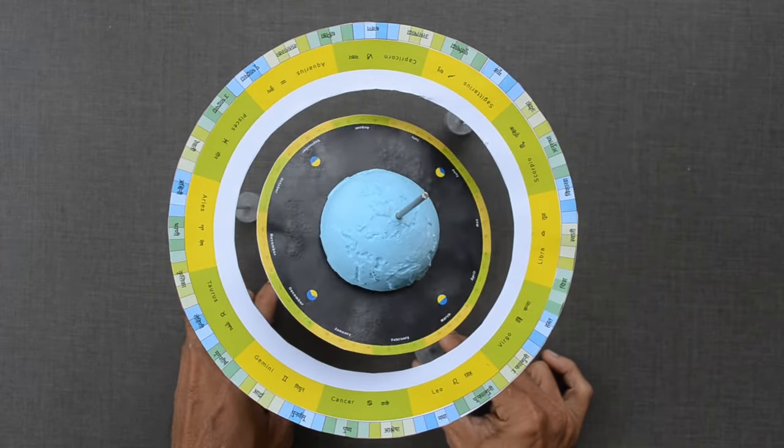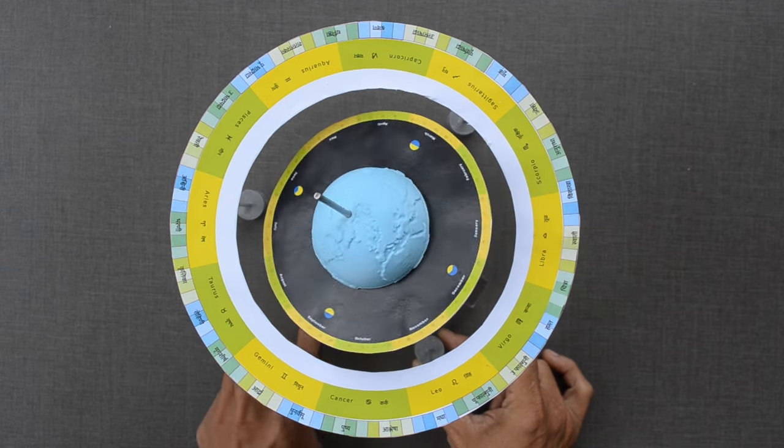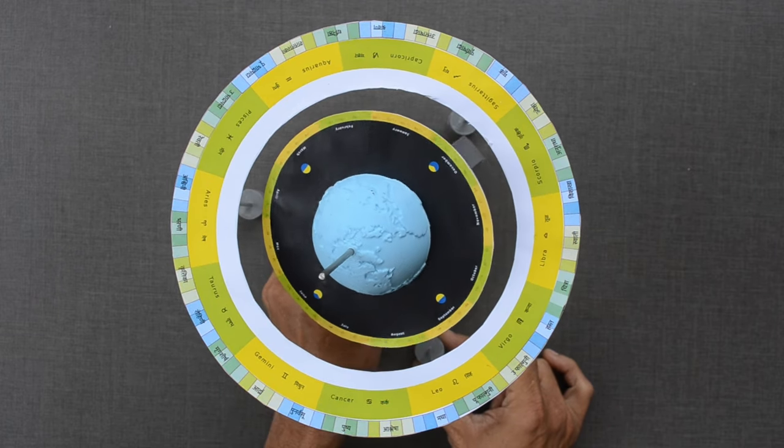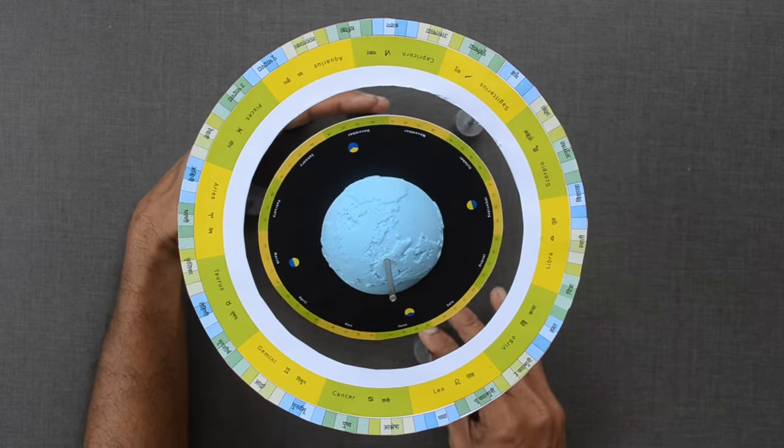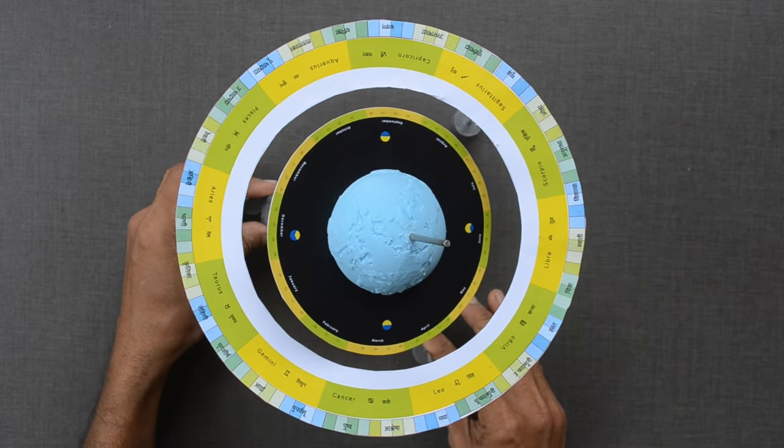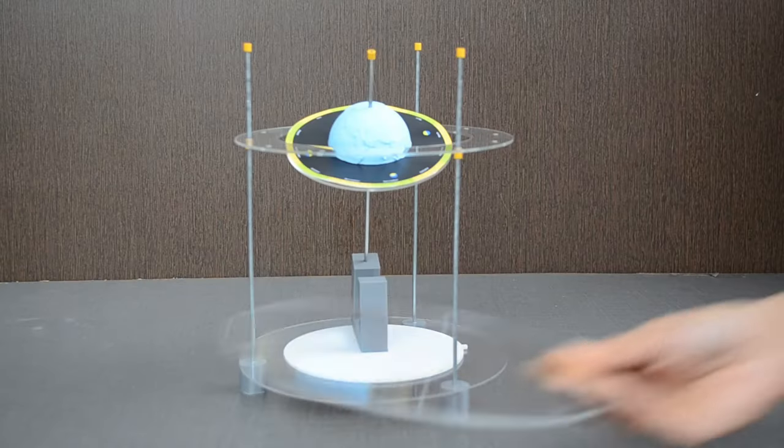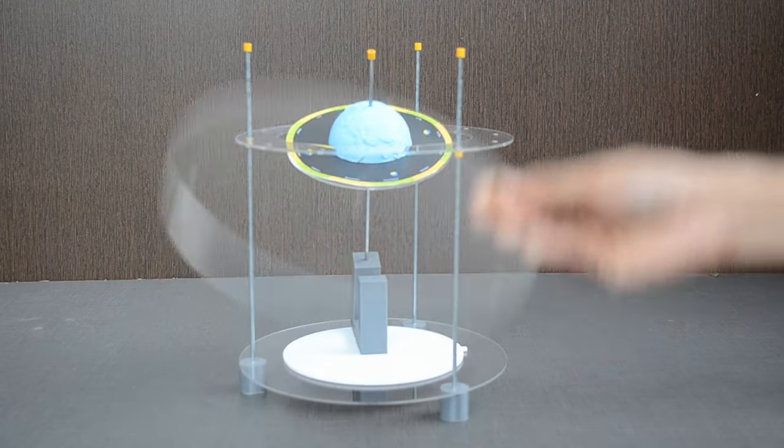There is another important change which happens due to this precession. We will rotate the assembly slowly to visualize how orientation of the celestial north pole changes over time. Let us place this transparent disk on the top.